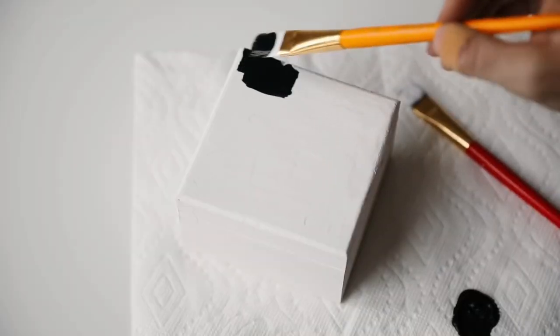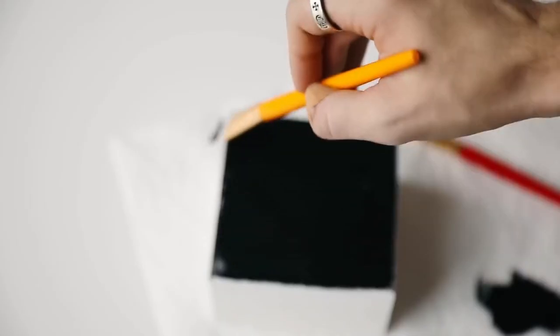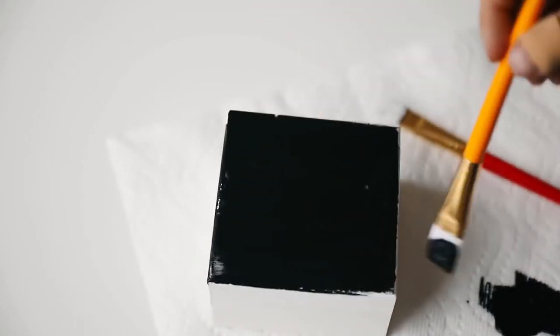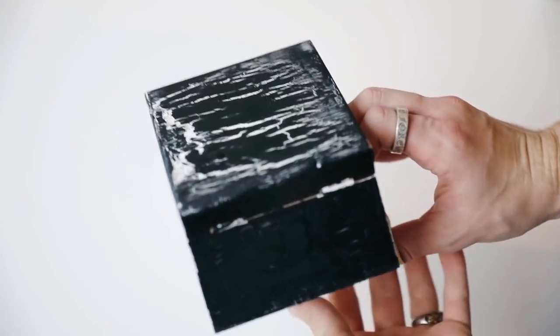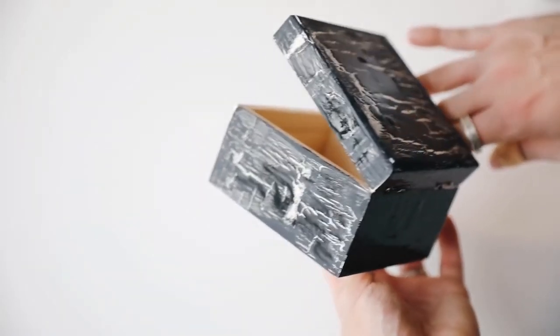The next step is applying a generous layer of Elmer's glue on the top section. Then right over top of the glue before it can dry—literally immediately after applying it—apply a layer of your acrylic paint. As it starts to dry, the glue will separate the paint and create a cracked finish.